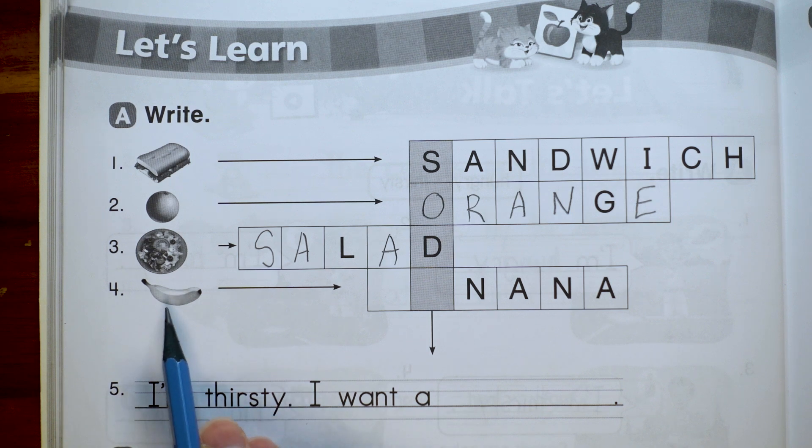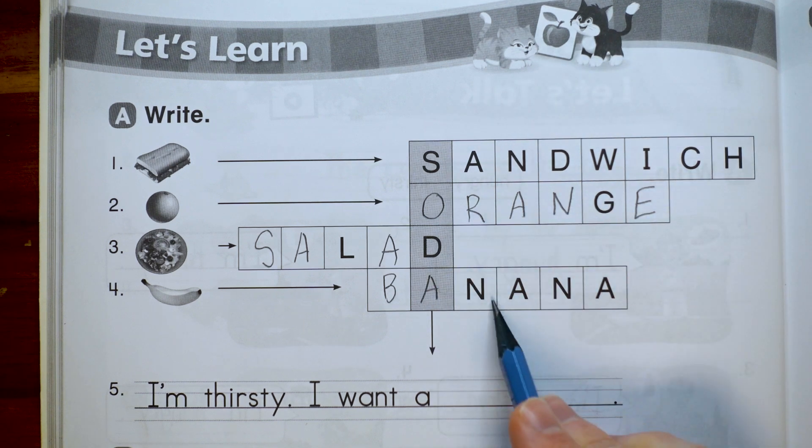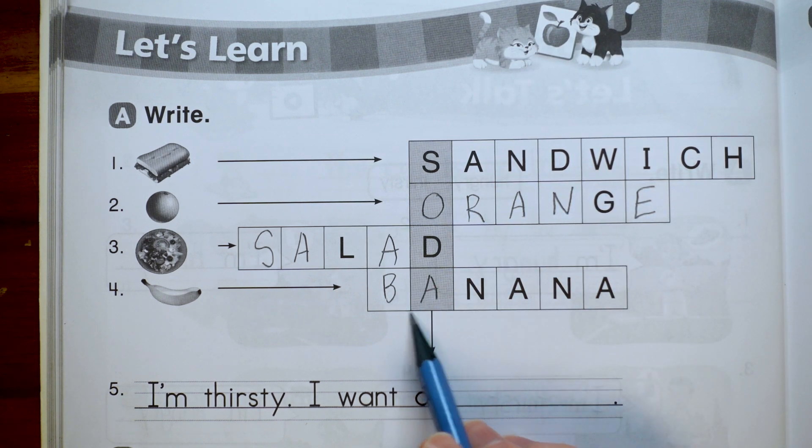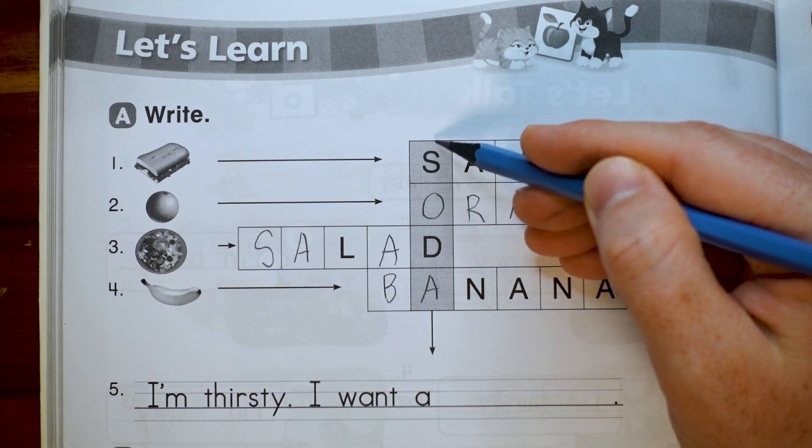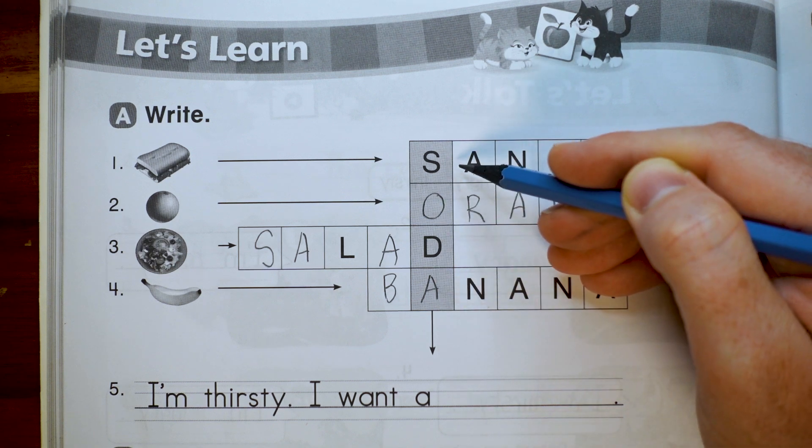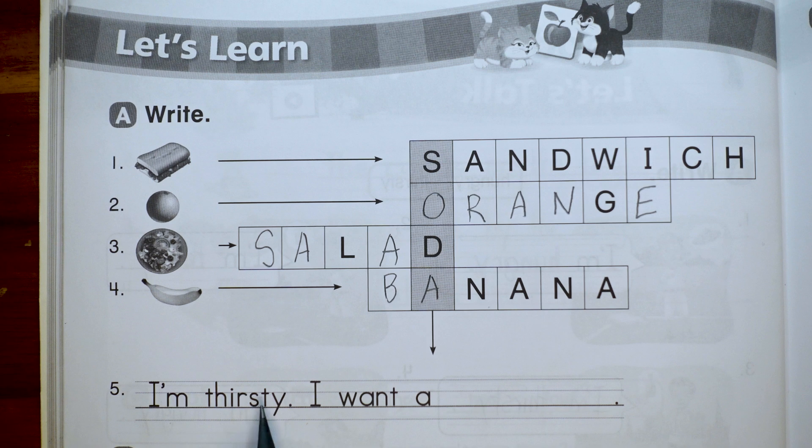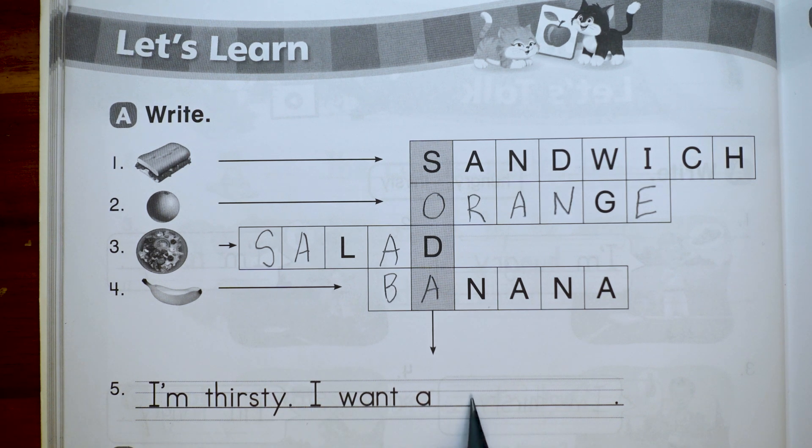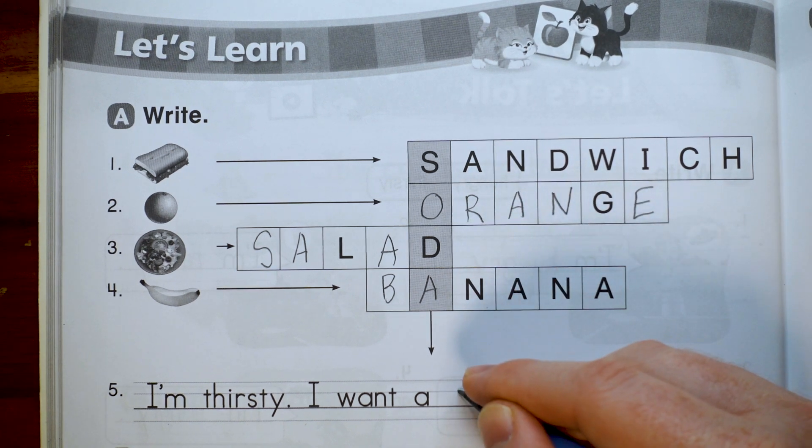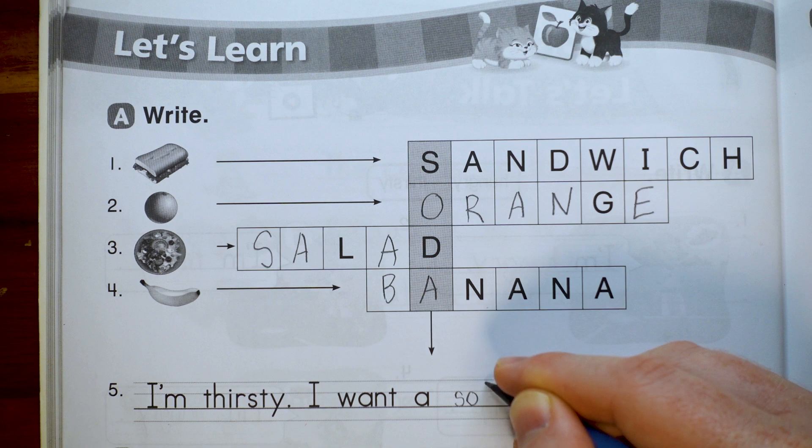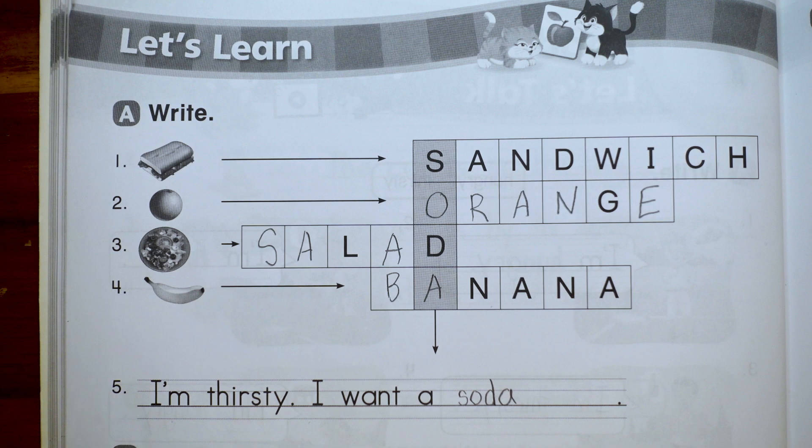And number four, well, that is a banana. B-A-N-A-N-A. And if we did all of this correctly, it makes a secret word right here. What's that word? Soda. We can write it down here. I'm thirsty. I want a soda. Here, these are big letters. Here I'll write small letters. Small s-o-d-a. Great. Part A is all done.